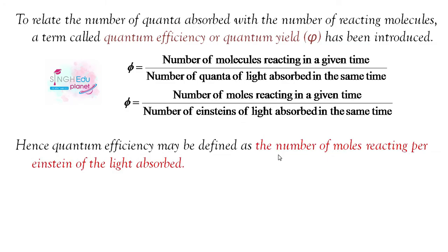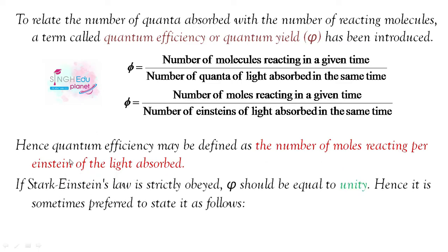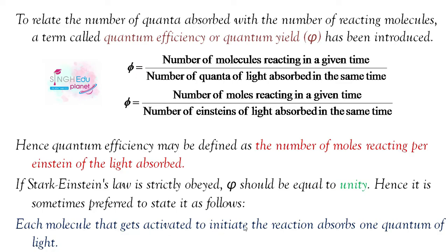We can also express this as: φ = number of moles reacting divided by number of Einsteins of light absorbed. So quantum efficiency is defined as the number of moles reacting per Einstein of light absorbed. If Stark-Einstein law is strictly obeyed, then φ should be equal to unity. Each molecule that gets activated to initiate the reaction absorbs one quantum of light.